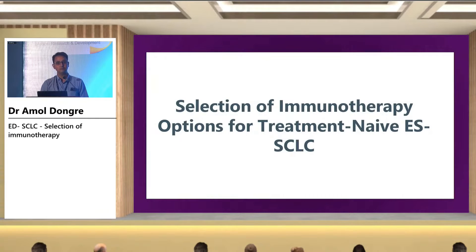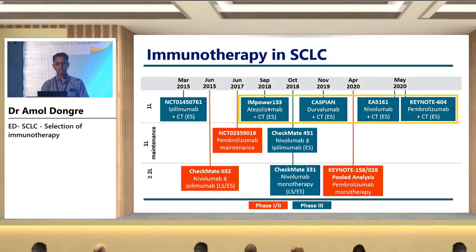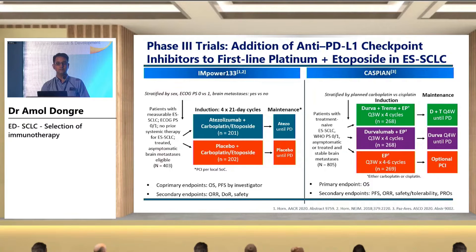Coming to the selection of immunotherapy options for treatment-naive extensive stage SCLC, this slide shows the evolution of immunotherapy in small cell lung cancer. In 2015, initial trials suggested ipilimumab plus chemotherapy in extensive stage as a first line — a phase 3 trial. Then we have CheckMate 032 as a phase 2 trial in second line, then Pembrolizumab maintenance as first-line maintenance in June 2017. Then came IMpower 133 and CASPIAN, which are phase 3 trials of first-line immune checkpoint inhibitors in SCLC. Then CheckMate 451 — nivolumab with or without ipilimumab in first-line maintenance — and two more trials: addition of nivolumab plus chemotherapy (EA-5161) and Keynote 604, addition of pembrolizumab plus chemotherapy.